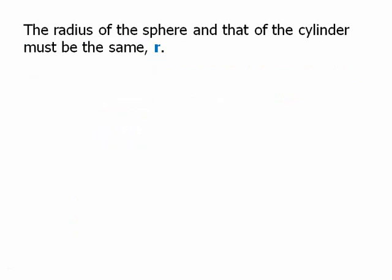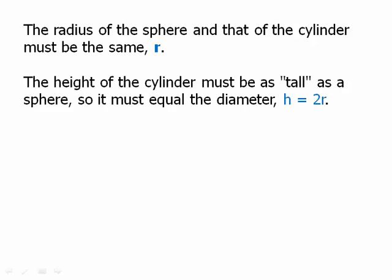Okay. Well, let's think about this. The radius of the sphere and that of the cylinder must be the same, r, because they touch each other. So that's the radius. The height of the cylinder must be as tall as the sphere. So it must equal the diameter, which is 2r. So the height of the cylinder is 2r.